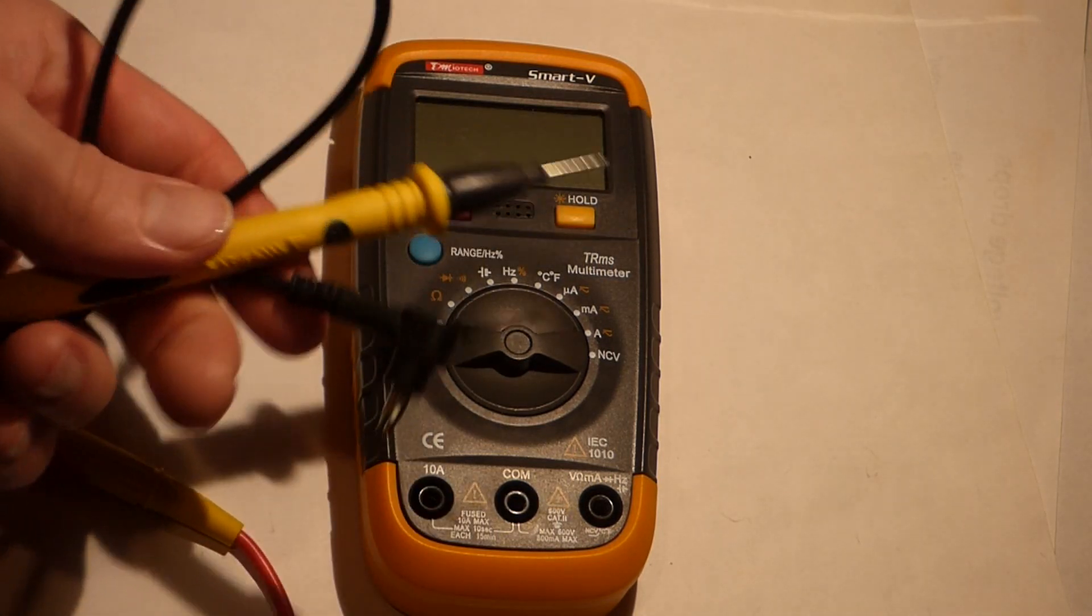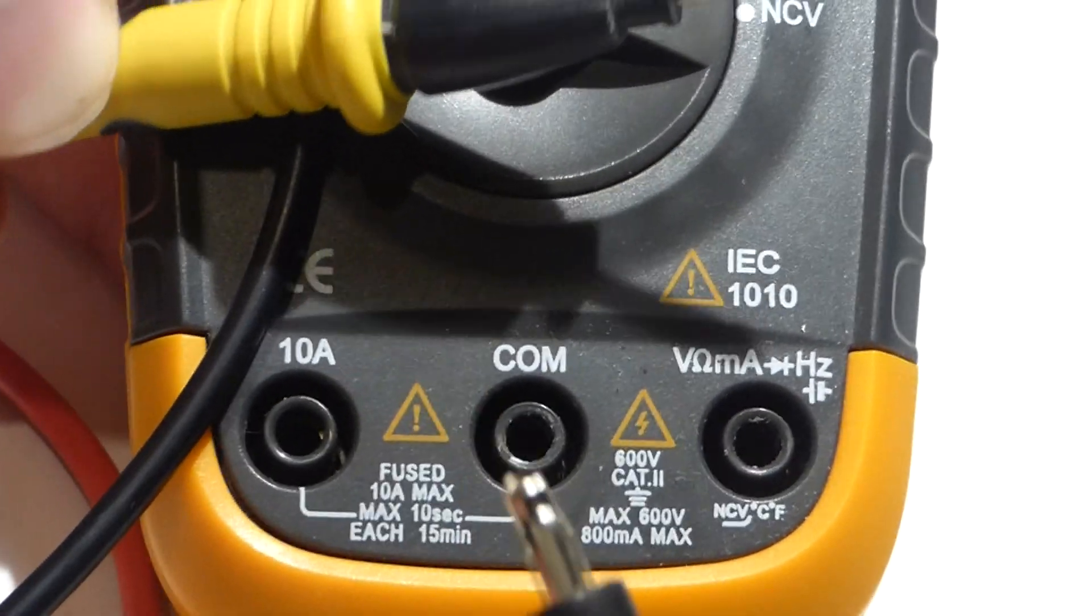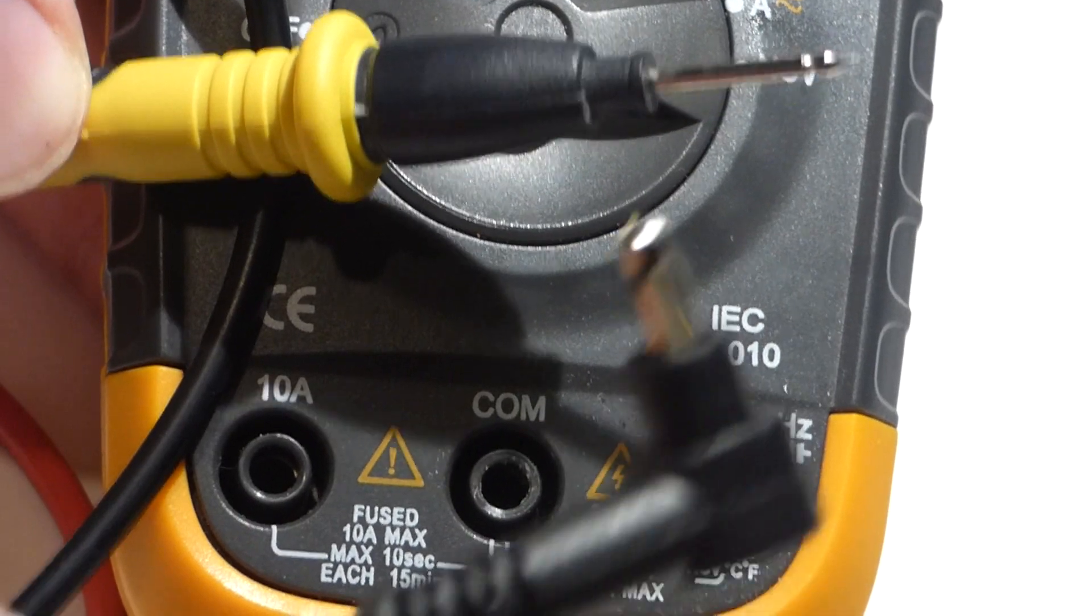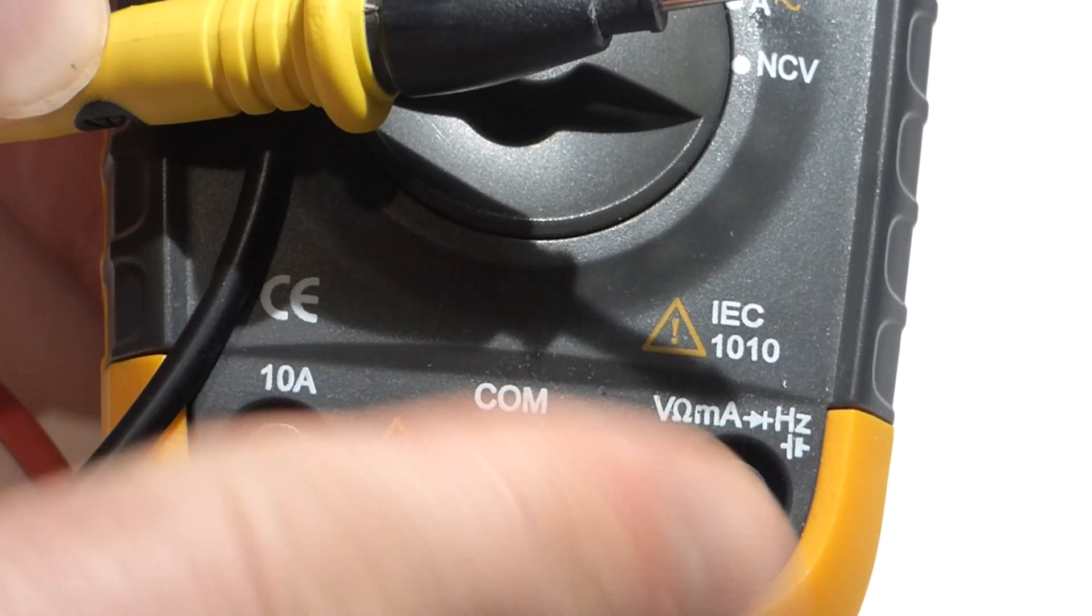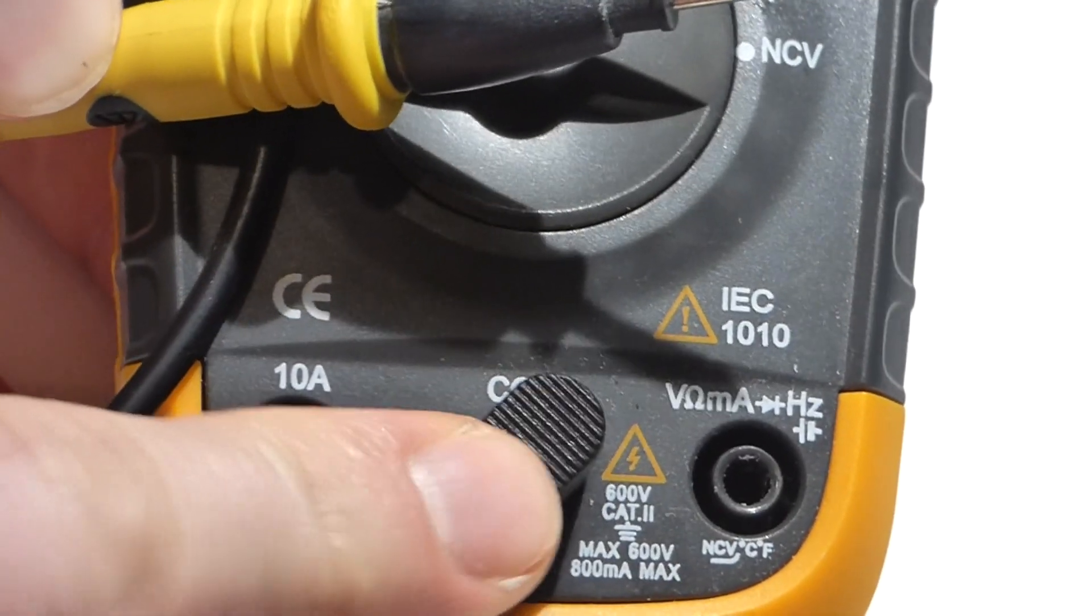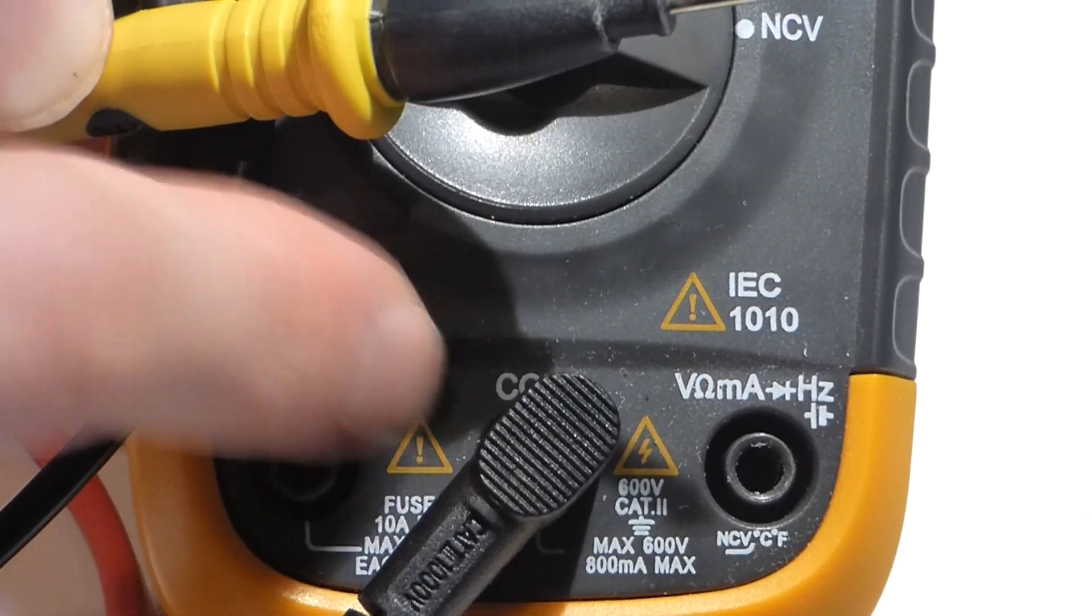So the first step is we're going to insert these probes into the meter. To begin with, the black probe here, not the pointy end but this end, goes into the slot labeled COM. And as far as I know, on all multimeters the black probe is entered into COM.